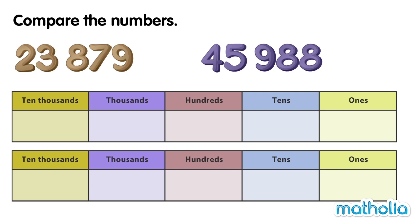Compare the numbers. Let's compare 23,879 and 45,988. Let's start by writing the numbers in a place value chart.